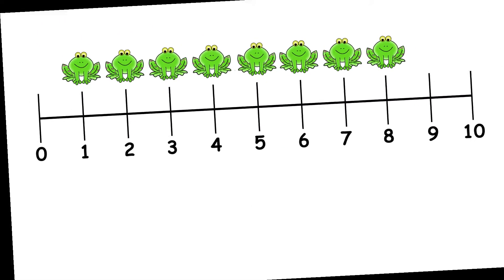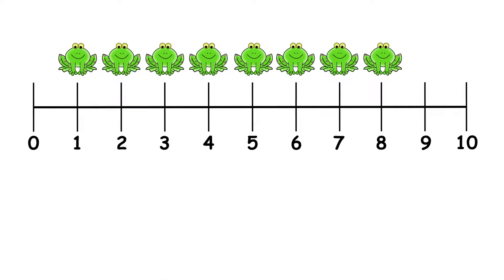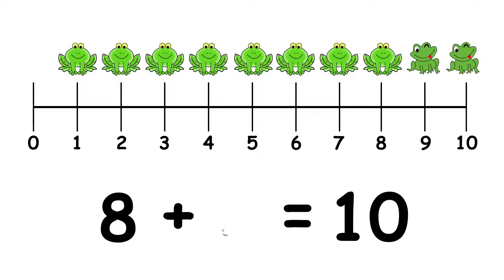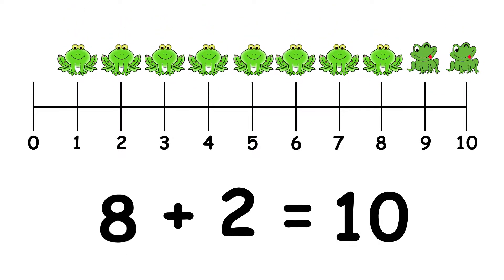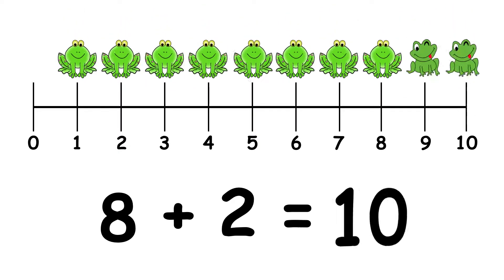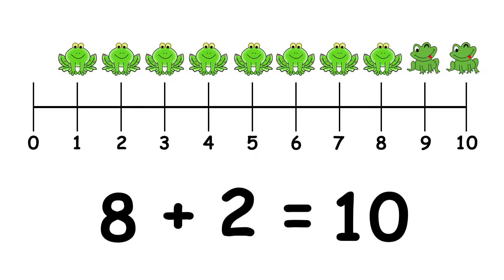We have 8 frogs. How many more do we need to make 10? 1, 2. 8 and 2 make 10.